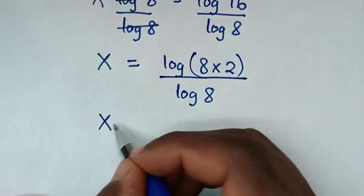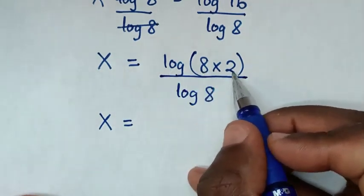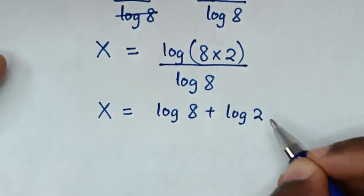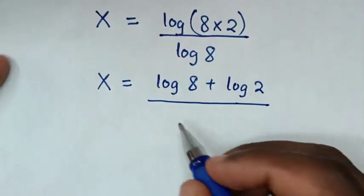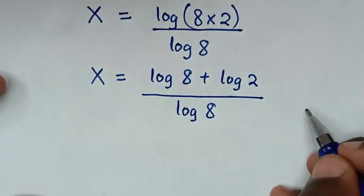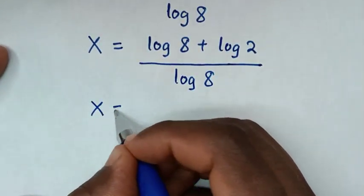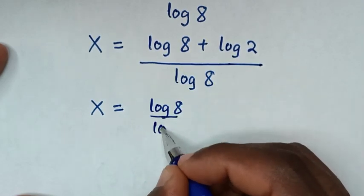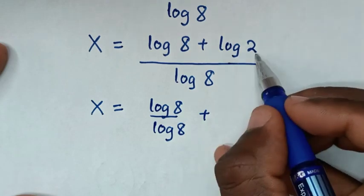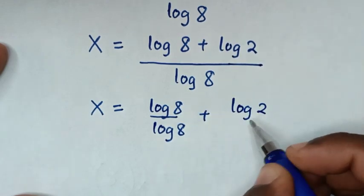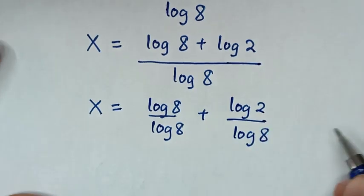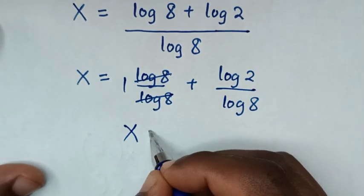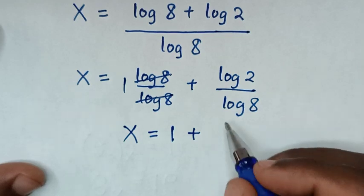Now log of 16 is the same as log of 8 times 2, which equals log of 8 plus log of 2, all over log of 8. In the next step, log of 8 over log of 8 will cancel to give 1, so it will be x is equal to 1 plus log of 2 over log of 8.